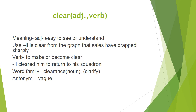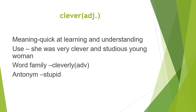Clear: adjective and verb. As an adjective: easy to see or understand — it is clear from the graph that sales dropped sharply. As a verb: to make or become clear — I was cleared to return to my squadron. Word family: clearance noun, clarity, clarify. Antonym: unclear.